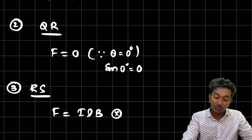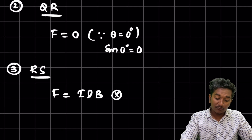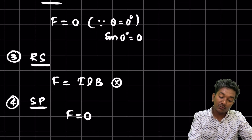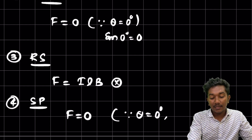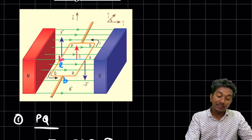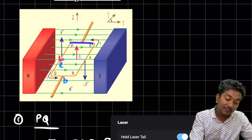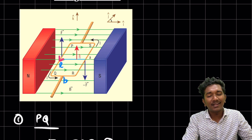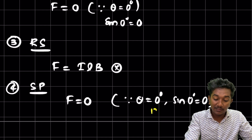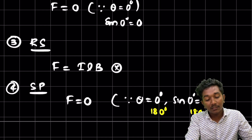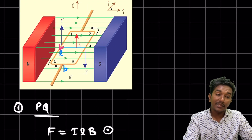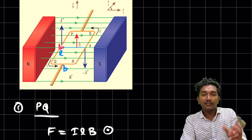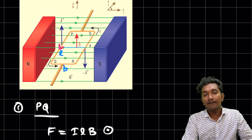The fourth conductor is SP. How much is the force? F = 0 again. Theta is either 0 or 180 degrees — the length is in one direction and the magnetic field is also along the same line. Since sin(0) = sin(180°) = 0, the force is zero. It depends on which direction you take the current, but either way the force is zero.